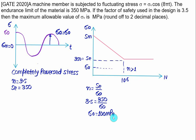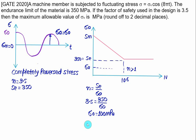For this completely reversed loading, the SN diagram approach is used. If a mean stress value exists, you can use any fatigue theory. You can also use the Soderberg theory here — if you put sigma M equal to zero in the Soderberg equation, you will get almost the same result.